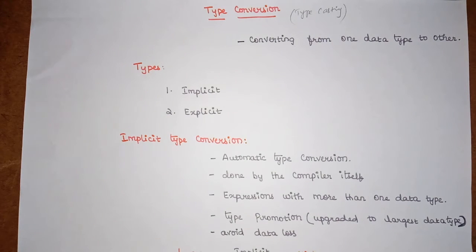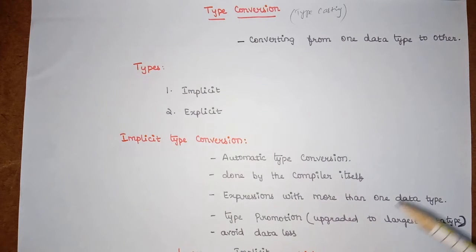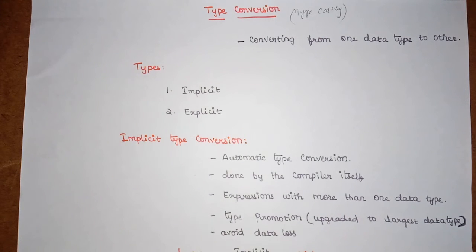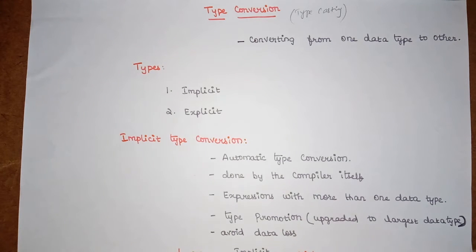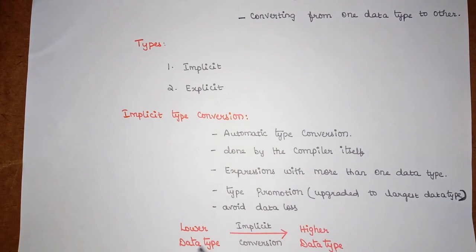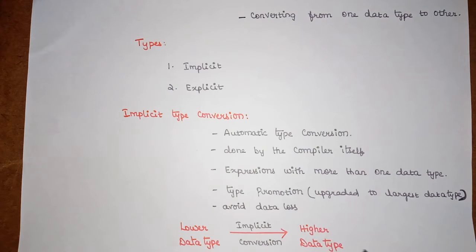So by the compiler itself, the variable from one data type can be converted to another data type. When we have expressions that involve more than one data type, that kind of expression may have implicit type conversion. This implicit type conversion is also called as type promotion. Promotion means upgrading to some higher level, and here type promotion means upgrading to the largest data type — that is, converting the lower data type to the higher data type.